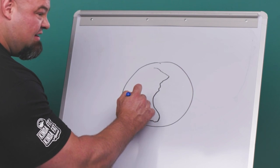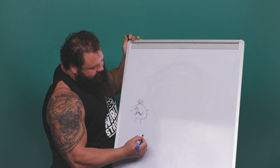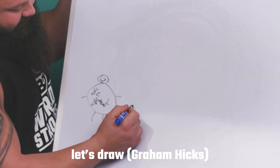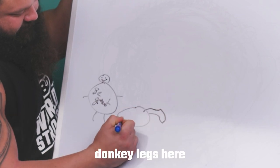All right. It's looking nice, huh? You like that? And then he's hanging out with... Let's draw Hixie. Donkey legs here.